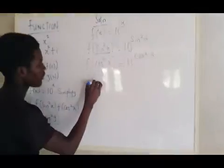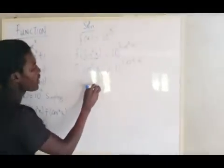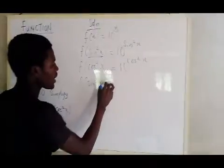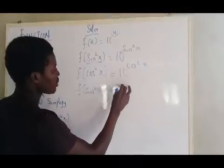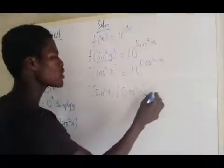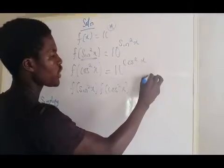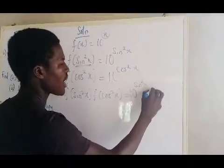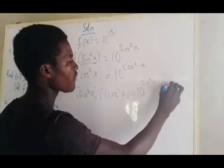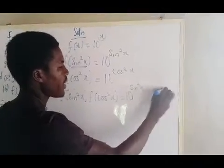Now there are products of f(sin²x) and f(cos²x). Their product is 10 raised to power sin²x multiplied by 10 raised to power cos²x.